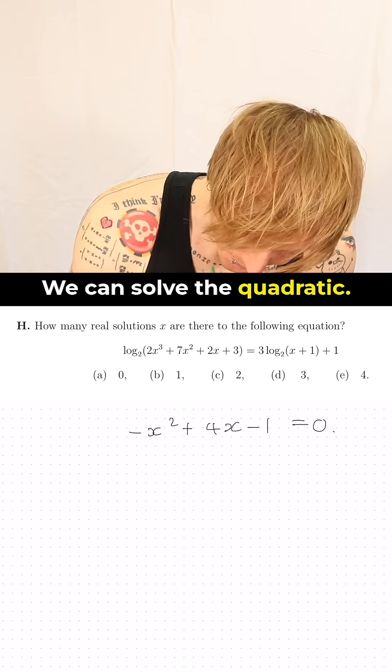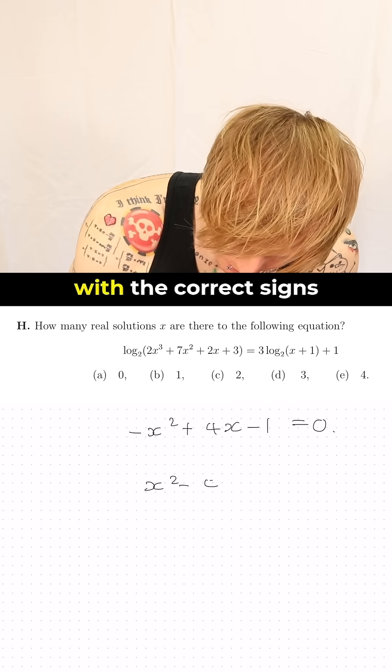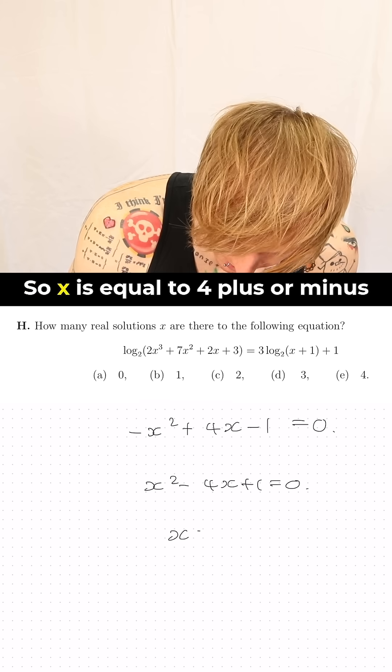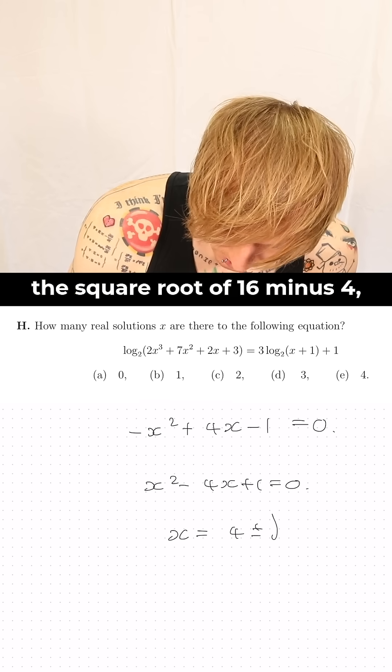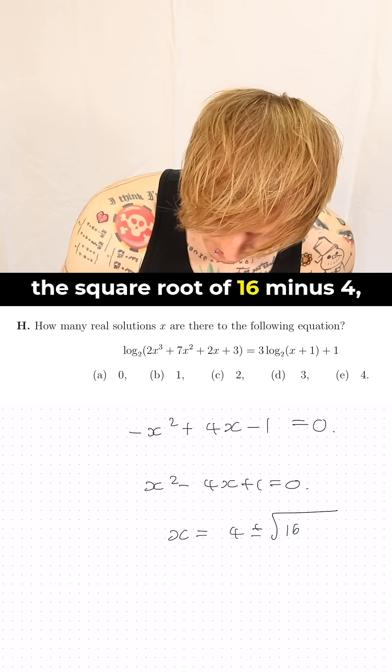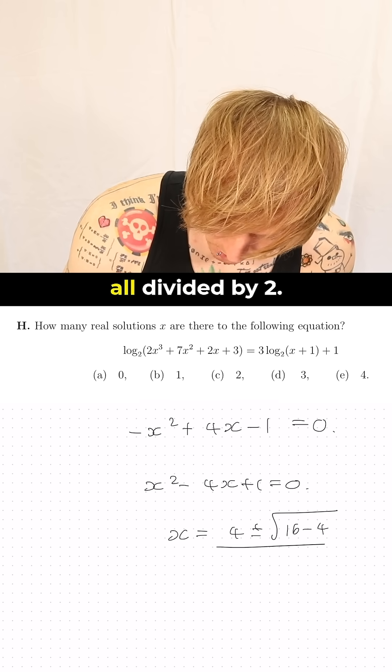We can solve the quadratic, I'm just going to rewrite it with the correct signs to help me out. So x is equal to 4 plus or minus the square root of 16 minus 4 all divided by 2.